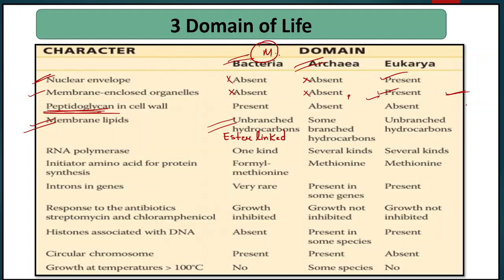Next character: lipid linkage. In Archaebacteria, the lipids are basically branched and ether-linked. In Eubacteria, the lipids are unbranched and ester-linked. In Eukaryotes, the lipids are also unbranched and ester-linked.